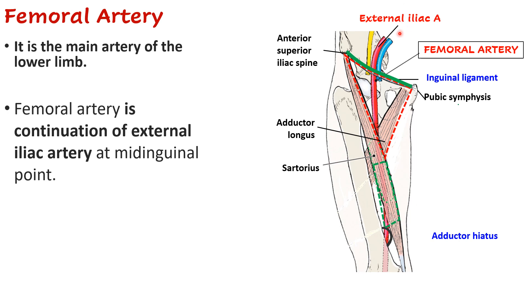From the abdominal aorta we get the common iliac artery, which divides into the internal iliac artery going to the pelvic region and the external iliac artery. As soon as it crosses the inguinal ligament at the mid-inguinal point, you start calling it the femoral artery.